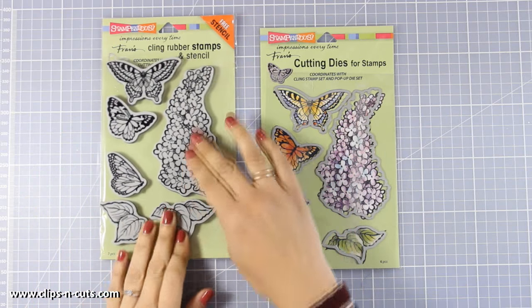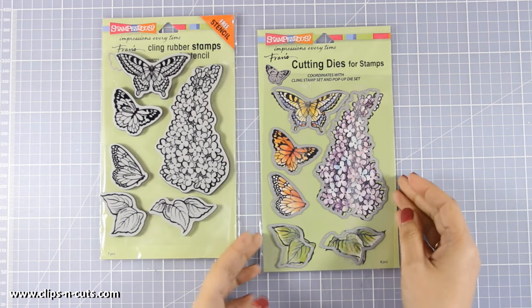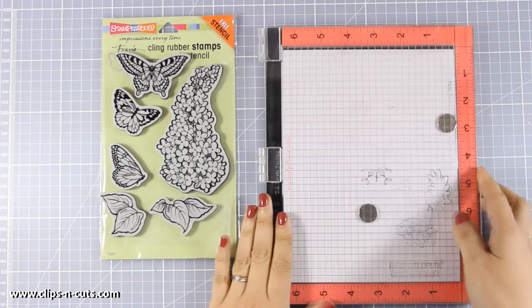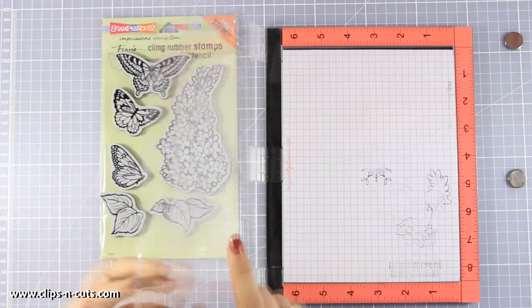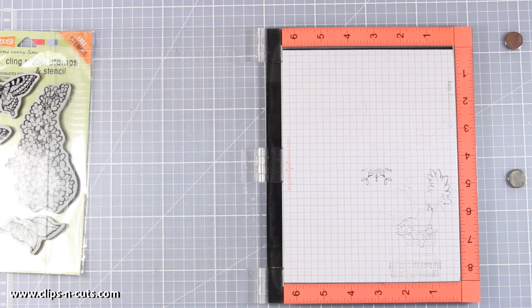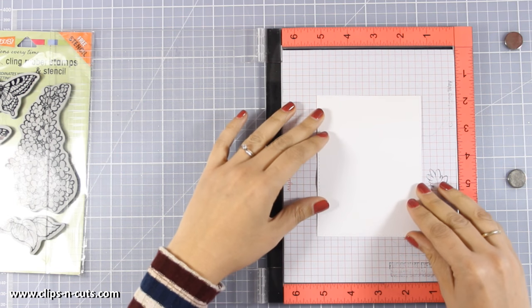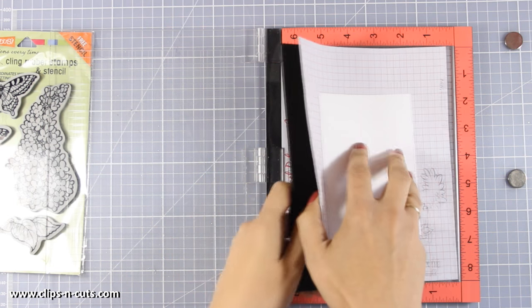For my card today I will be using the lilac dies and stamps. These are both by Stampendous and I'm going to start by stamping some of these images on a piece of paper. Now I have a white cardstock here which is slightly smaller than my standard card. I'm going to place it inside my MISTI.